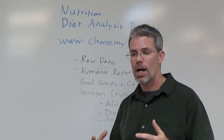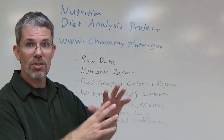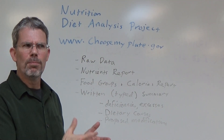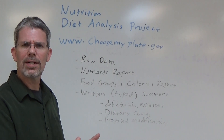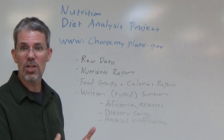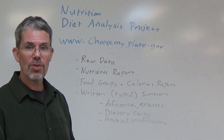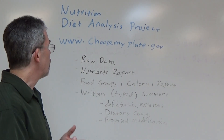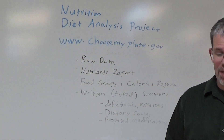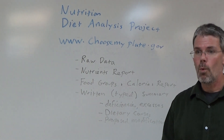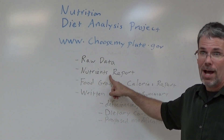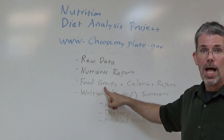In some cases it's menu driven and you'll get to select what matches what you have. But in some cases you may not be able to find an exact match, in which case you may have to pick the closest thing and use your best judgment — that's okay. Once you've entered all the information, you need two printouts: the nutrients report and the food groups and calories report.